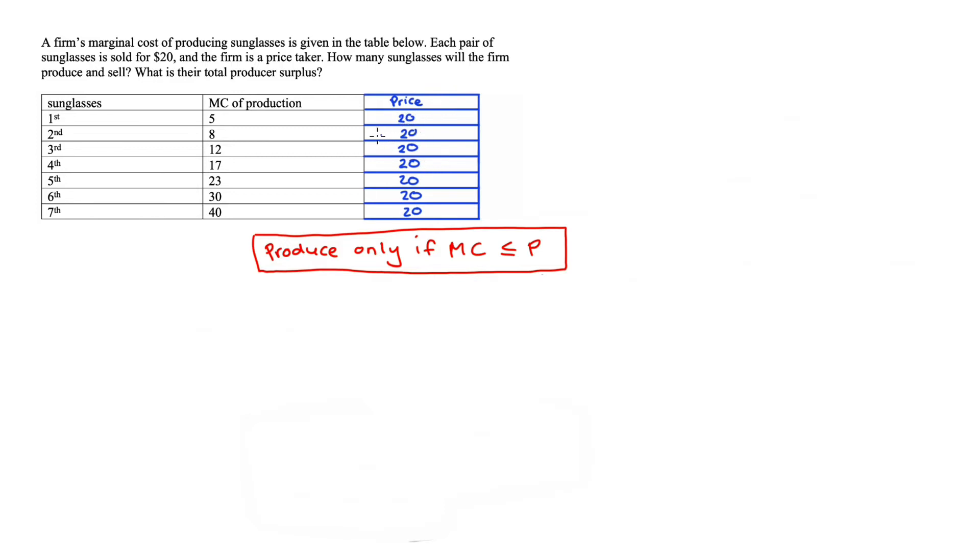Once we set out the columns like this, it's really easy to see that if the firm sells one pair of glasses, the marginal cost for that first pair is lower than the price since $5 is less than $20.